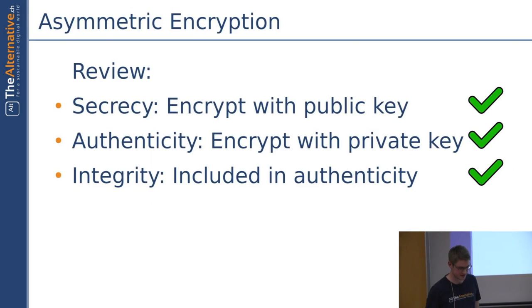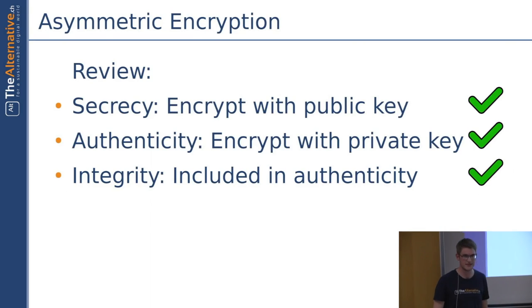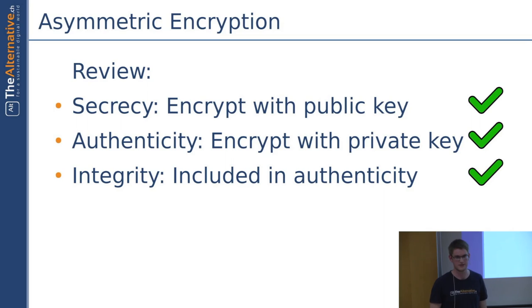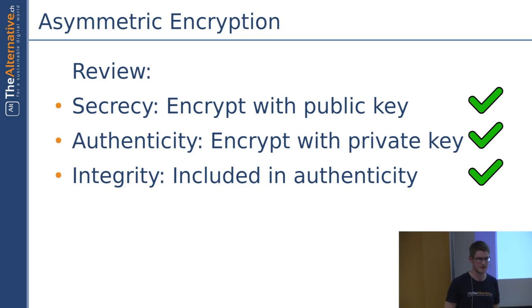Reviewing the asymmetric encryption scheme, now we have everything we want. We have secrecy by using the asymmetric encryption scheme by encrypting with the public key. And we attain both authenticity and integrity if we encrypt with the private key instead. We also gain integrity by using the trick that we send both the encrypted message and the plain message to the other person.